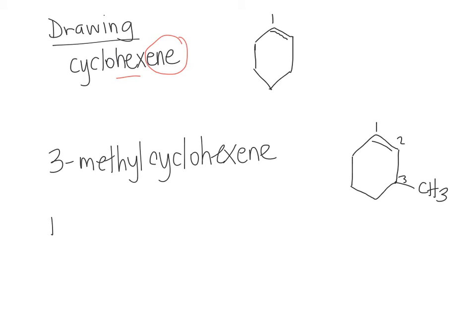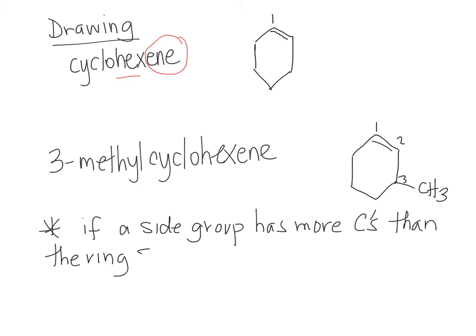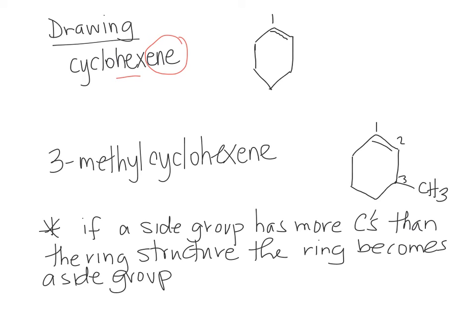Just one point to add for naming and drawing. If a side group has more carbons than the ring structure, the ring becomes a side group, and the straight part is the parent.